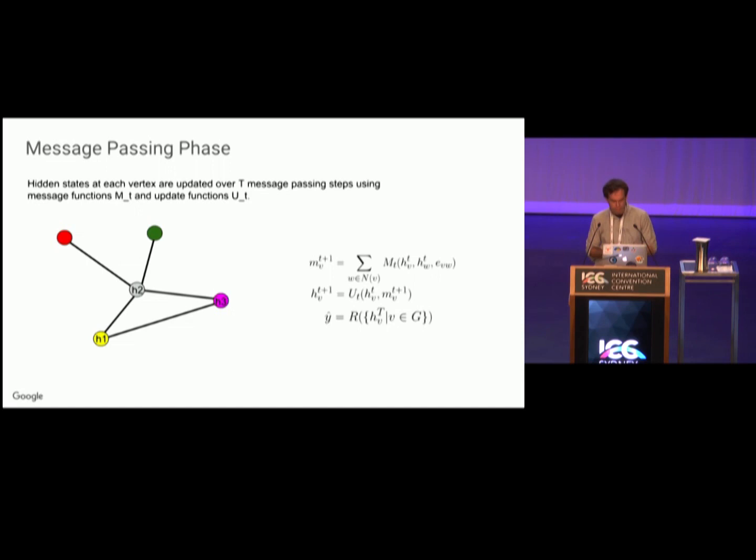During the message-passing phase, you have hidden states at each vertex in your graph, and you're going to update these hidden states over T message-passing steps. These are defined in terms of message functions and update functions. I'm going to illustrate how to update the hidden state of this yellow vertex, H1. You first use your message function to compute messages going from the neighbors of vertex 1 into H1, or into vertex 1. The message function is generally defined as some learned differentiable function that takes as input the source node, the target node, and the edge between them, and it outputs a message vector.